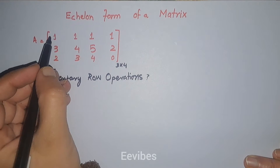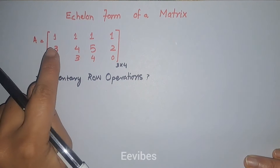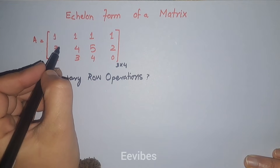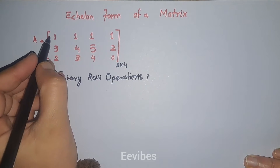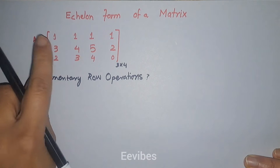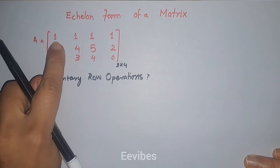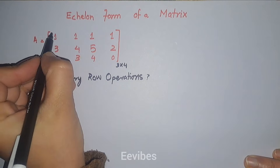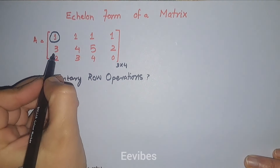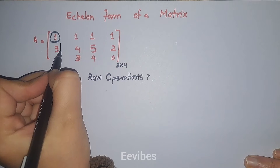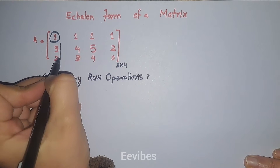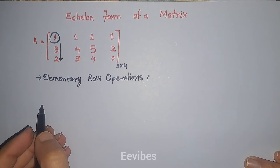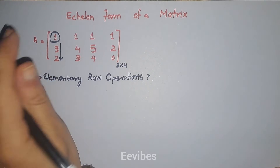The echelon form of a matrix is found by making all the entries below the pivot equal to zero. In the first row, the first non-zero entry is known as the pivot entry, so one is the pivot here. Our task is to make all the entries below it equal to zero by performing elementary row operations.